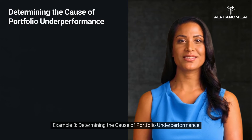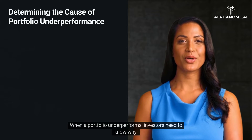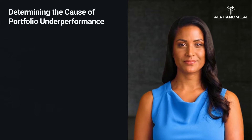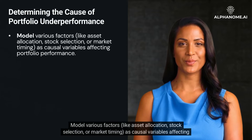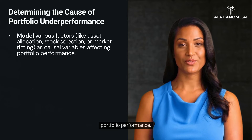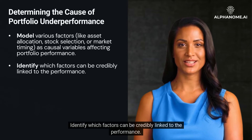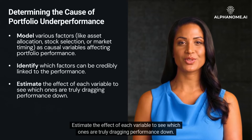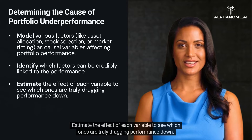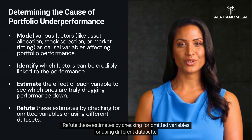Example 3: Determining the cause of portfolio underperformance. When a portfolio underperforms, investors need to know why. They might use DoWhy to model various factors — like asset allocation, stock selection, or market timing — as causal variables affecting portfolio performance. Identify which factors can be credibly linked to the performance, estimate the effect of each variable to see which ones are truly dragging performance down, and refute these estimates by checking for omitted variables or using different datasets.